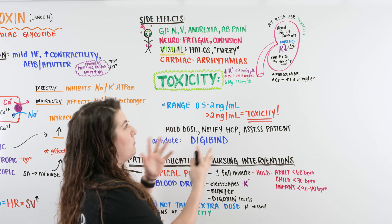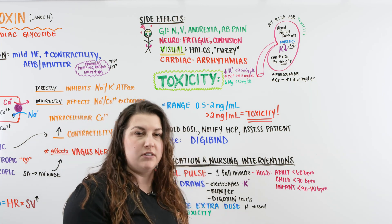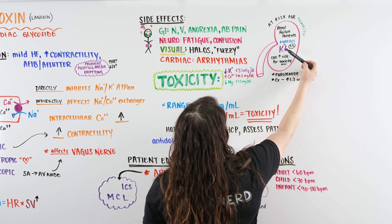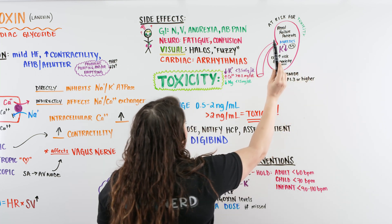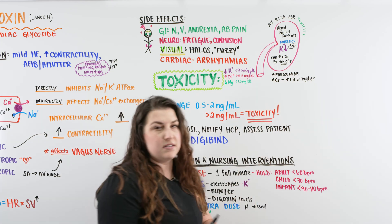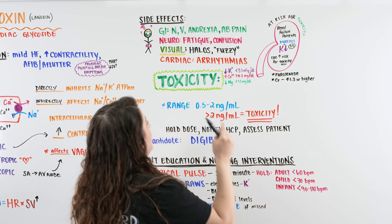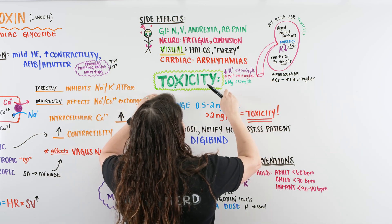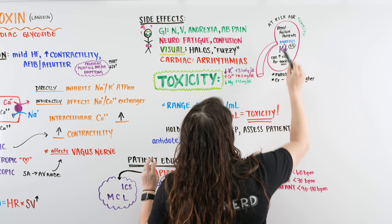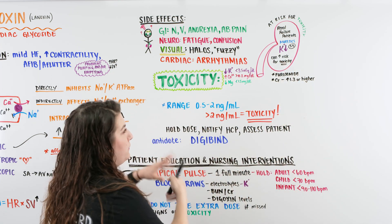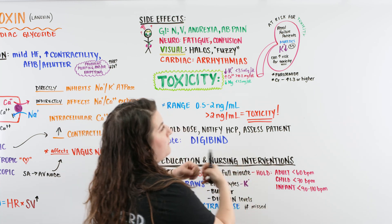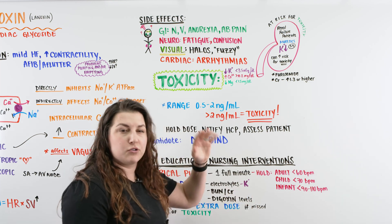Patients most at risk for toxicity are those with renal failure or those on diuretics. A patient on a loop diuretic like furosemide will have low potassium, and hypokalemia increases the risk for toxicity. Digoxin does not cause low potassium — it works on sodium and calcium — but because potassium and digoxin can bind to similar sites, lower potassium means less competition, so digoxin levels rise faster and higher.